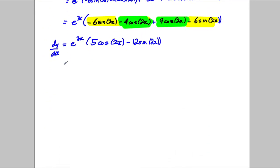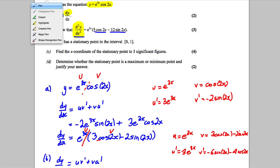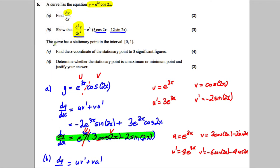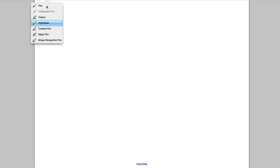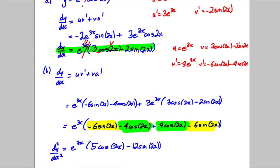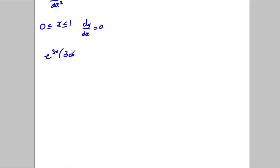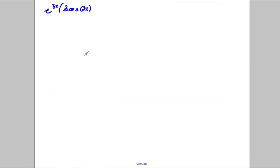To clarify: what we just found was the second differential d²y/dx², and the first differential dy/dx is e to the 3x times (3 cos 2x minus 2 sine 2x). The next part says the curve has a stationary point in the interval zero to one — find the x coordinate to three significant figures. At a stationary point dy/dx equals zero, so we set e to the 3x times (3 cos 2x minus 2 sine 2x) equal to zero.